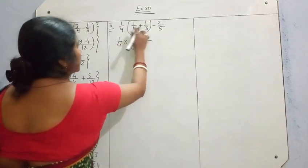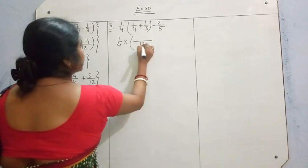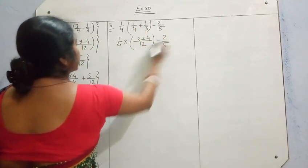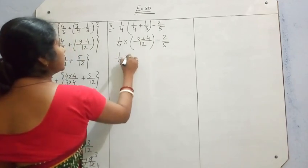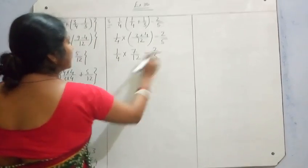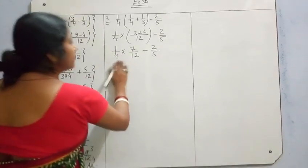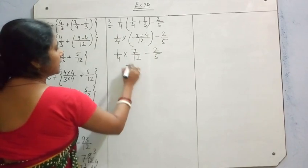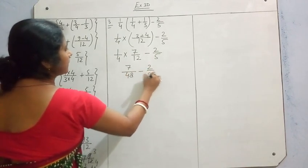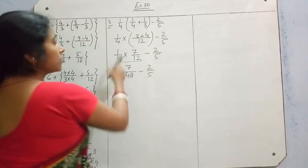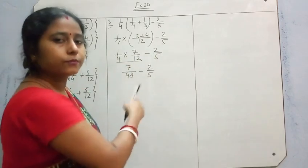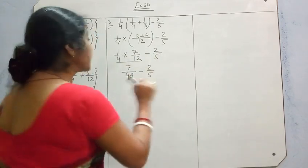Take LCM inside the bracket — LCM is 12. 3 ones are 3 and 4 ones are 4, so we get 7/12. Minus 2/5. So now 1/4 into 7/12 minus 2/5. Multiply: 7 ones are 7 and 12 fours are 48, giving 7/48. As you know, according to BODMAS we have to solve multiplication first — multiplication comes before subtraction.